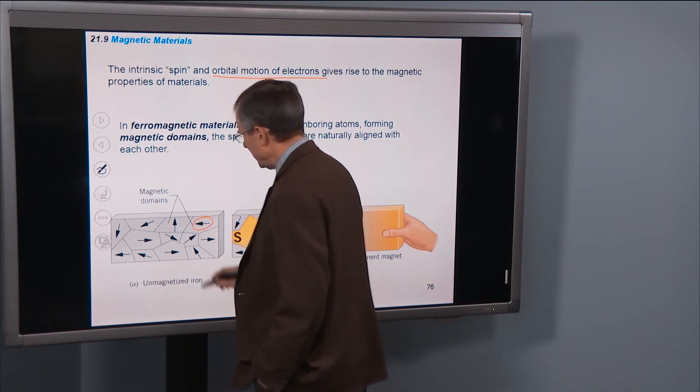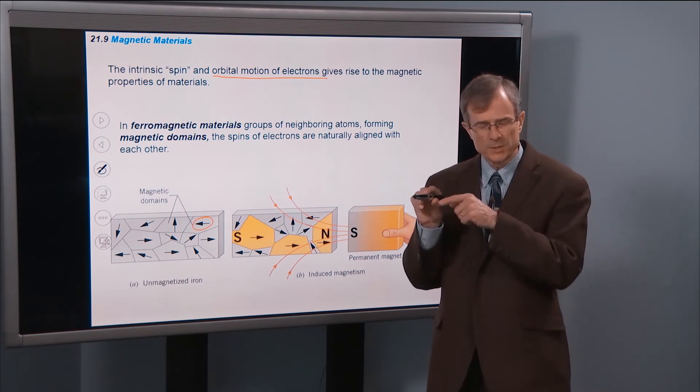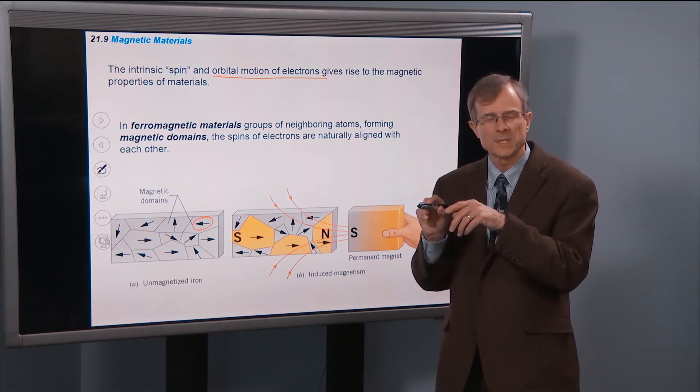The electrons spin and orbital motion of the electrons gives rise to the magnetic field. So what these little arrows represent are domains, regions of the ferromagnetic material, that are oriented, in which the electrons are, spins and orbital motions are oriented in a particular direction.